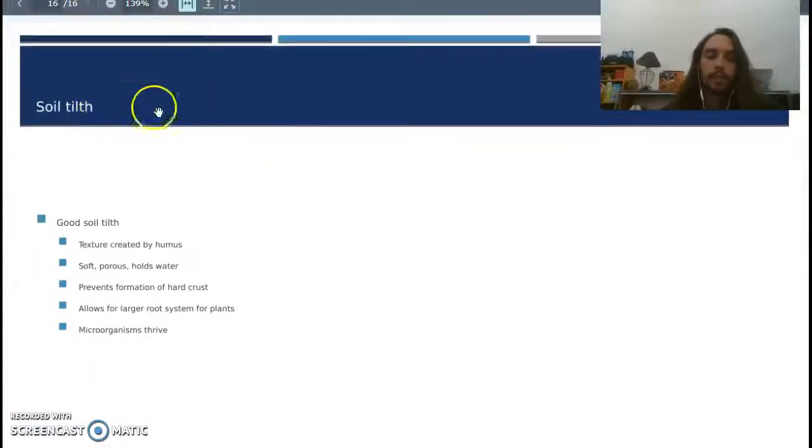And so then we talk about soil tilth. What is soil tilth? Well, good soil tilth is a texture created by humus. It's soft, it's porous, it holds water, it prevents the formation of a hard crust. Anytime you get a hard crust, you're going to lose porosity, you're going to lose water, you're going to lose life forms inside of there. So all those things that are going on in the soil are going to kind of slow down and it's not going to be as healthy.